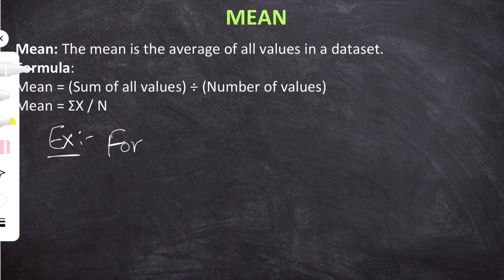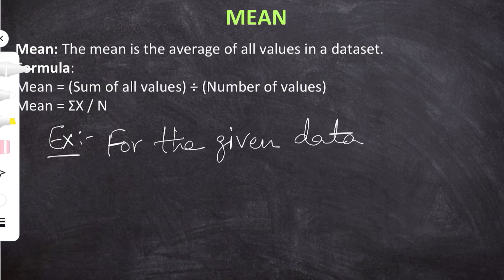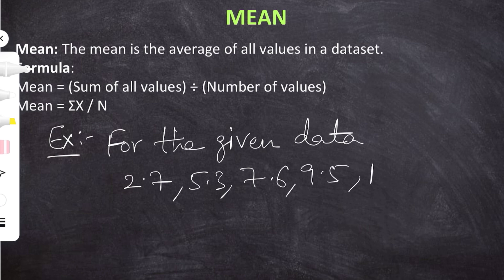Let's solve an example from previous year's papers. For the given data — 2.7, 5.3, 7.6, 9.5 and 15.4 — we have to calculate the mean. The formula of mean is sum of all values by number of values. Let's count how many values are given: 1, 2, 3, 4, 5.